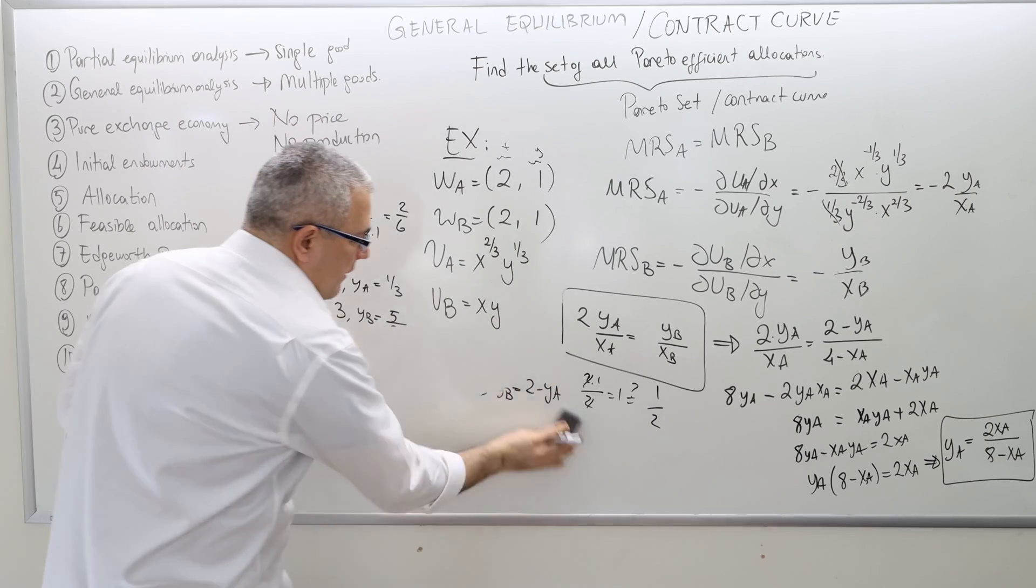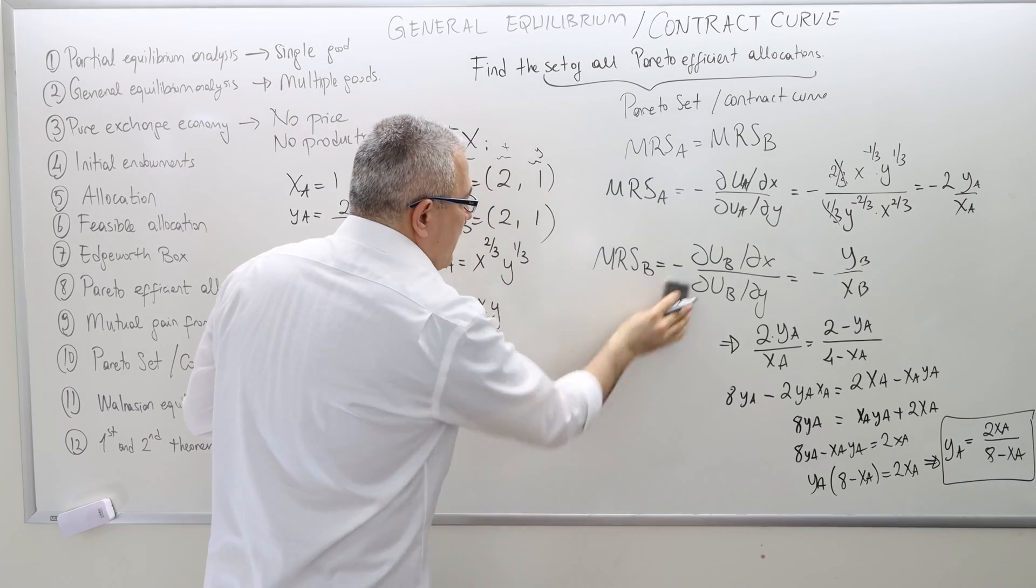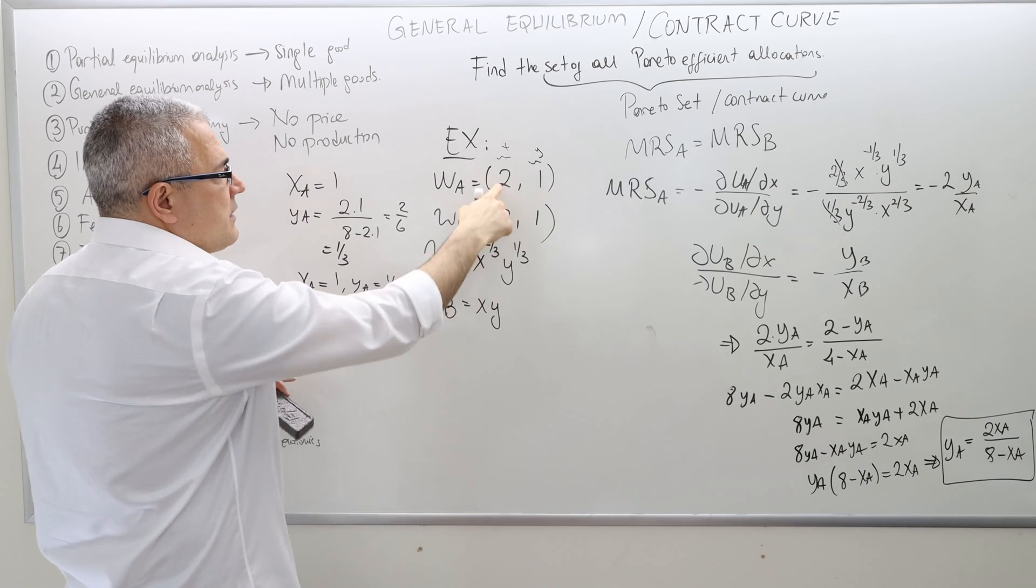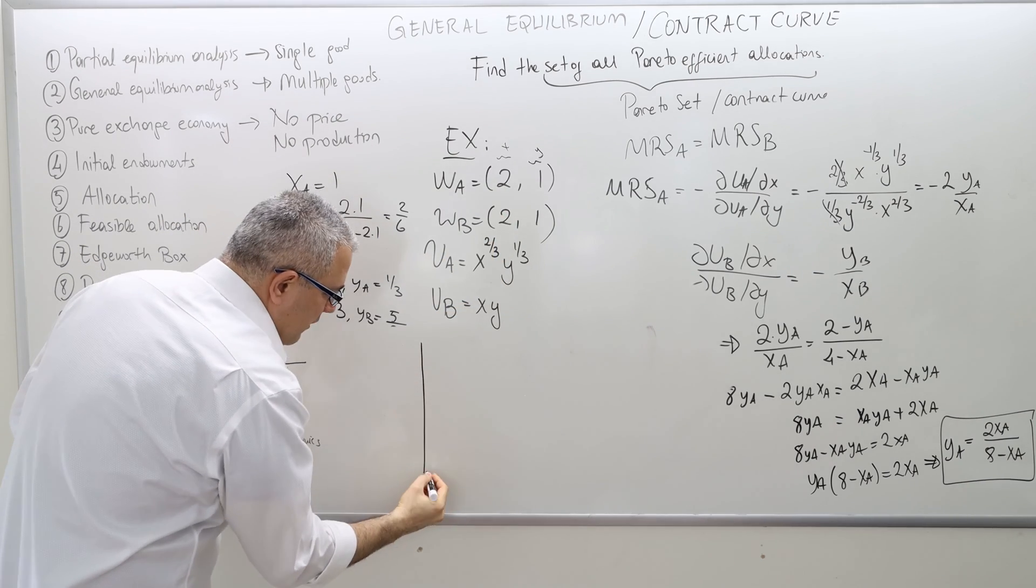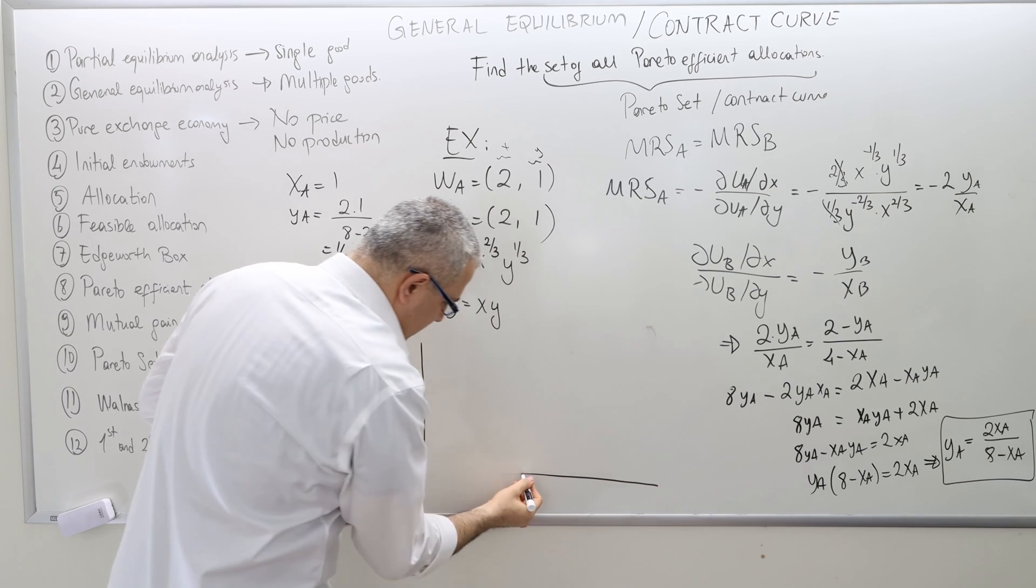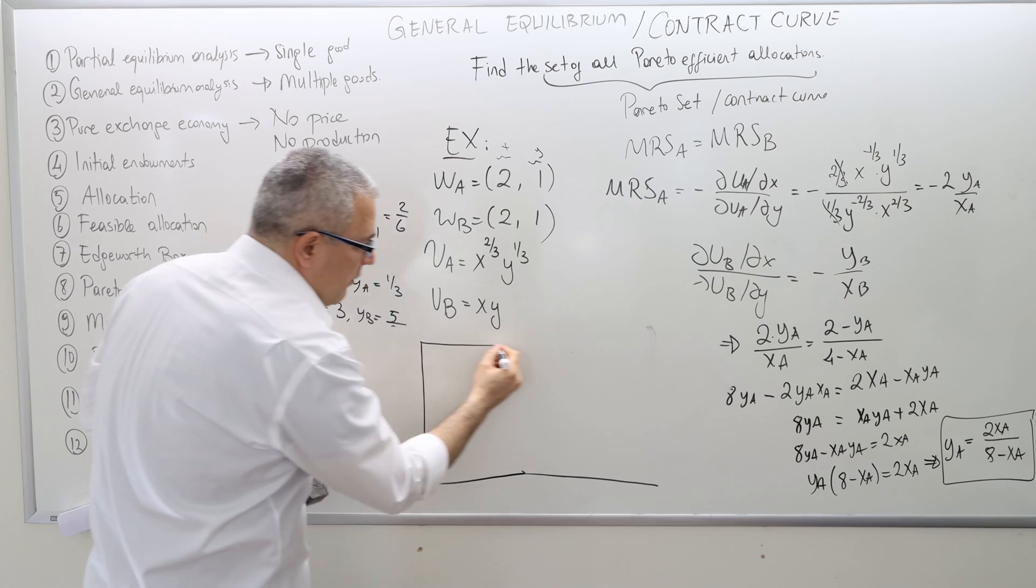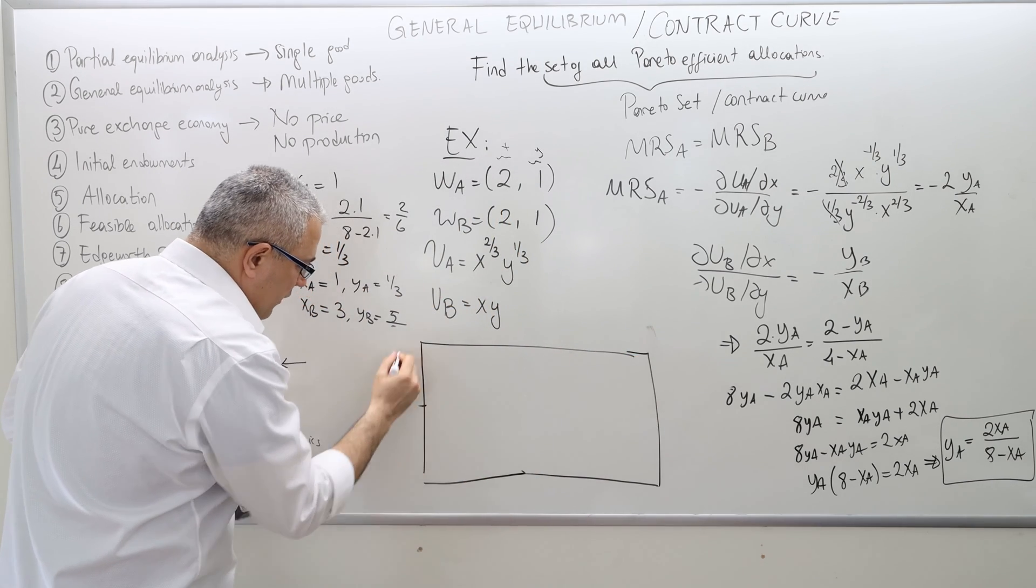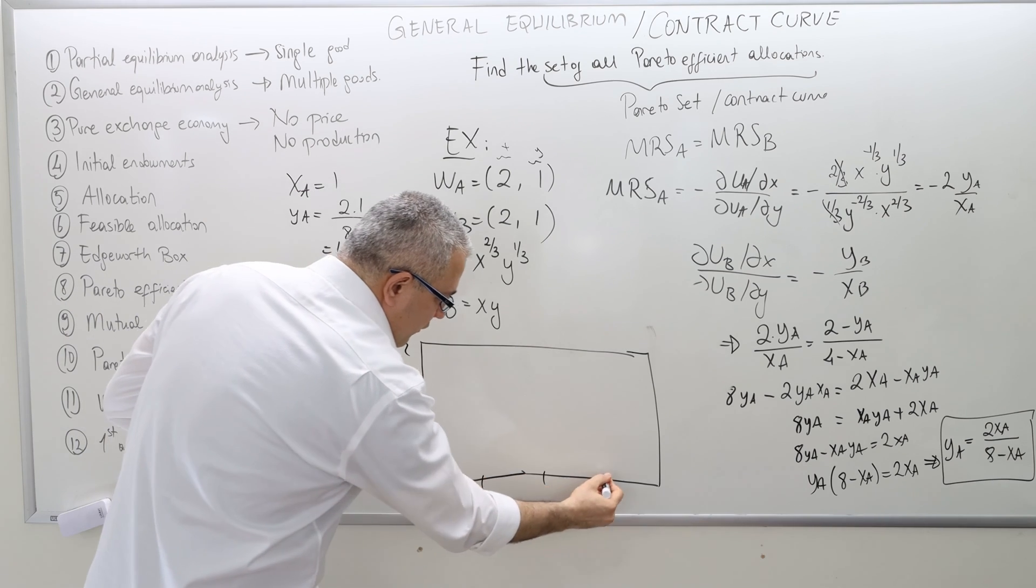So basically, in this economy, let me just draw the Edgeworth box and then finish this question. So this is a 4 by 2. Well, if this is 2, this is probably 4. So this is, again, 1, 2, 1, 2, 3, 4. So this is where agent A is.